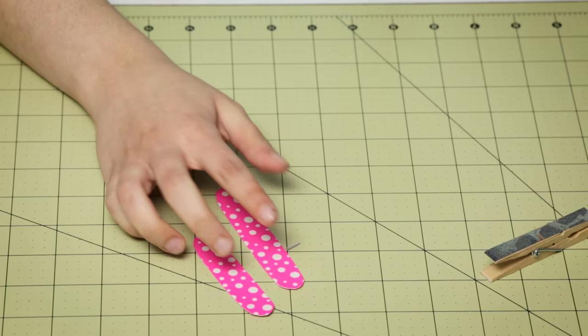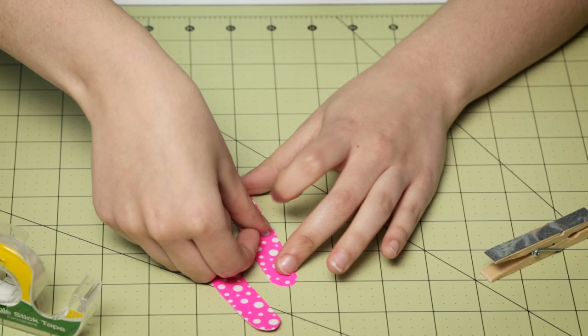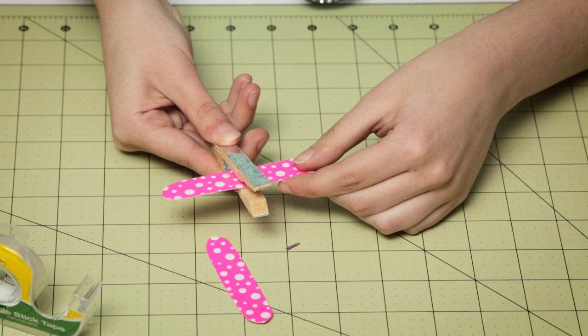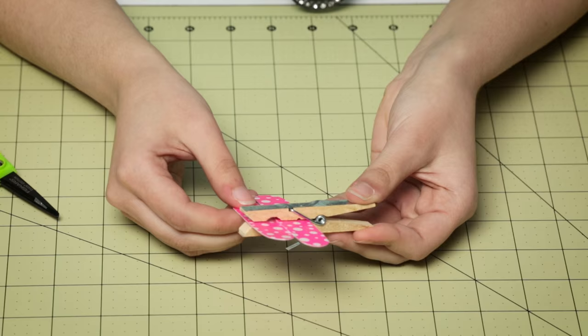Now we're going to take our double-sided tape here, and I'm just going to cut off a little piece. We're going to put this right in the middle of our wings. And then I'm just going to open up our clothespin here and put that in. And do the same thing with another one and just slide that in.